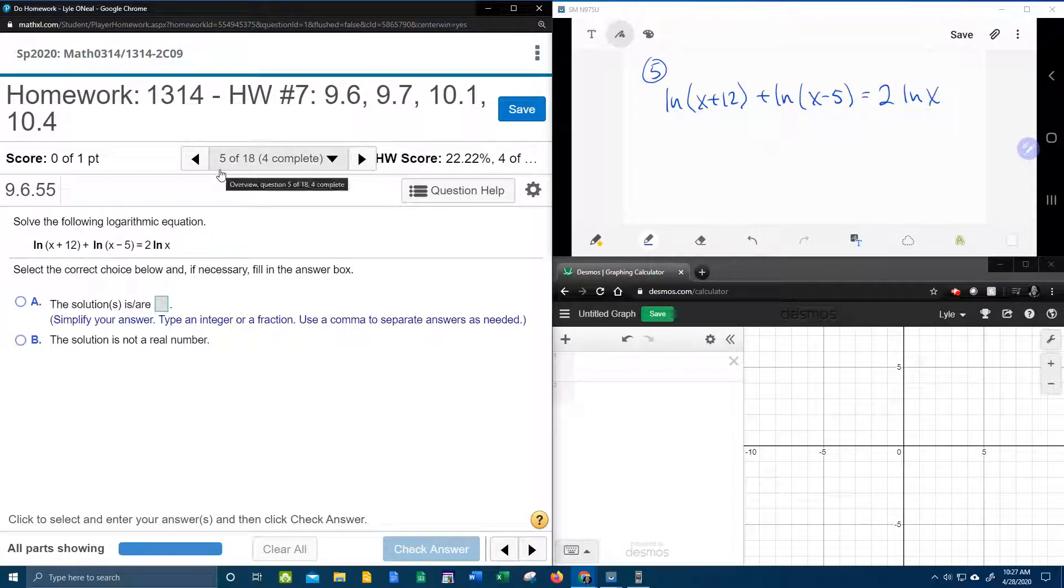All right, here we go. Question number 5 from our college algebra homework number 7 in my lab math. They've given us a logarithmic equation. They want us to solve for x, and I'm noticing there are just too many logs here. So we're going to have to condense some of these logs so that we can make this a little bit easier.